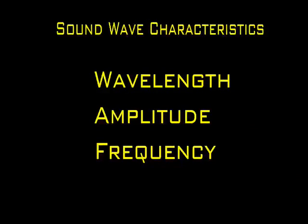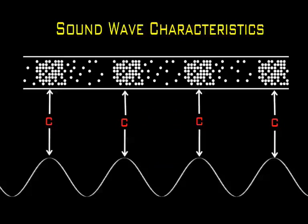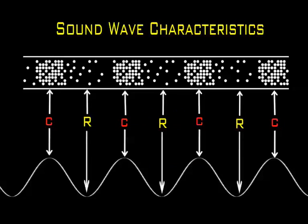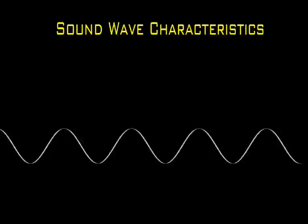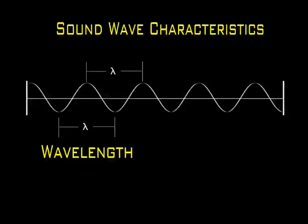I will now introduce the basic characteristics of a sound wave. We now know that the compressions are regions of high air pressure, while the rarefactions are regions of low air pressure. For this reason, the wavelength is commonly measured as the distance from one compression to the next adjacent compression.